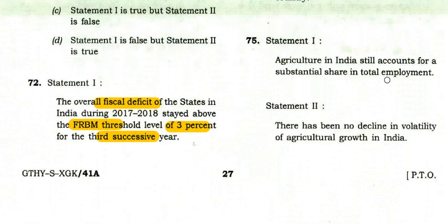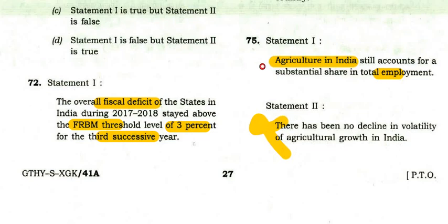Agriculture in India accounts for a substantial share in total employment — approximately 45–50% — true. Reason: there has been no decline in volatility of agriculture growth — false, there is a decline in volatility now. Only Statement 1 is correct — option C is right.